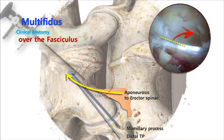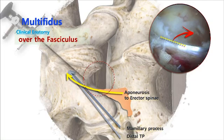This fibrous band is the multifidus. It originates from the mammillary process and transverse process and inserts into the dorsal border of the lamina. The clinical meaning is that you should run and go over the fasciculus to enter the spinal canal — don't try to remove this fasciculus, and don't remove muscle fibers on the lamina excessively.